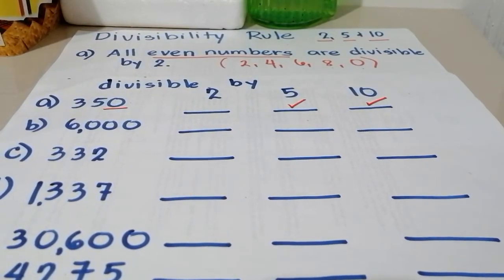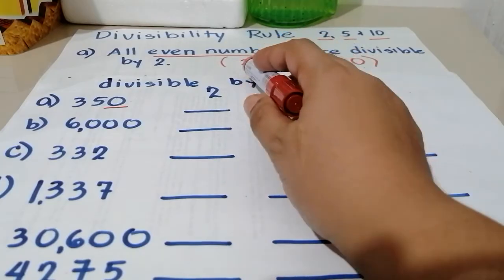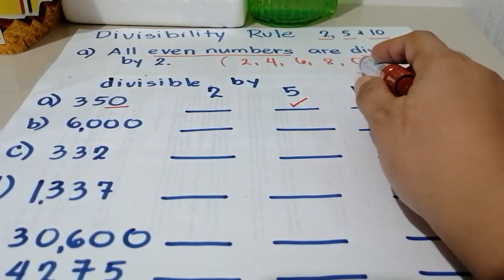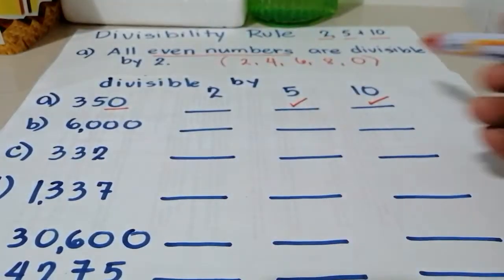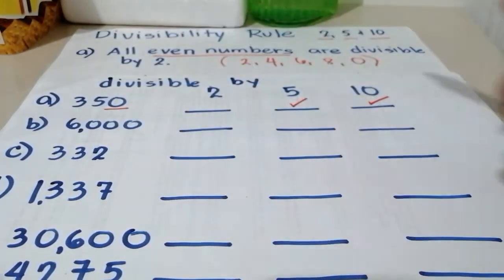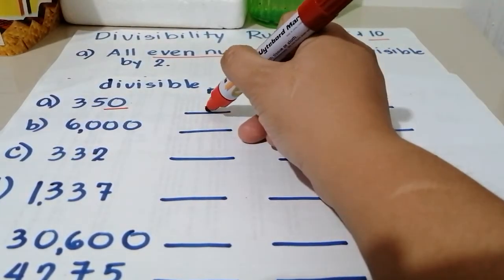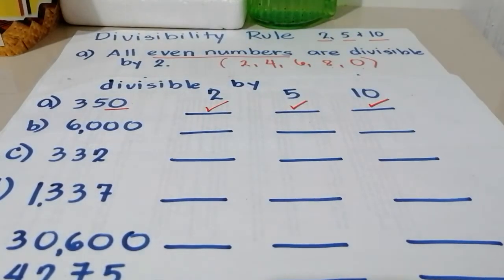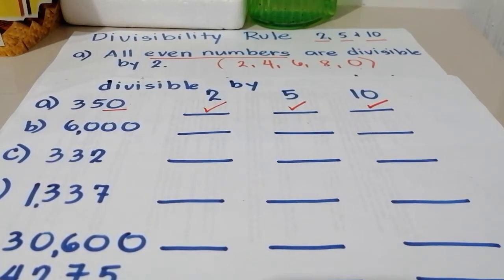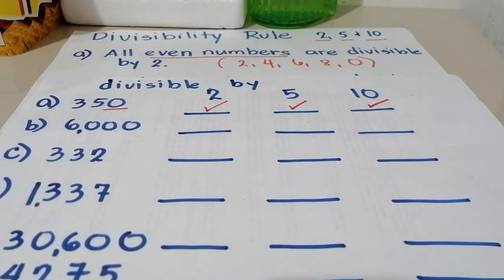Why? Because 350 is an even number. How would we know na even number siya? Because ang even number nag-i-end siya sa 2, 4, 6, 8, and 0. And this is 0. Kaya sinabi natin na ang 350 ay even number. Therefore, divisible din siya by 2. So in other words, 350 is divisible by 2, 5, and 10.